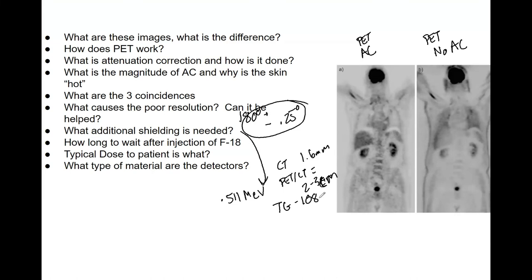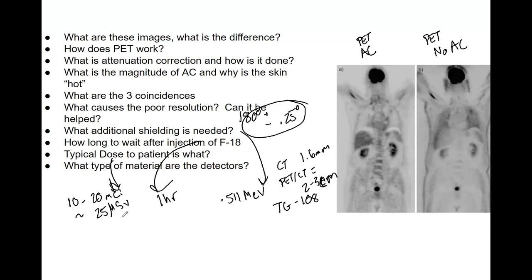How long do you wait after the injection of F18? Approximately one hour. What dose is given to the patient for a PET examination? You're looking at 10 to 20 millicuries, which equates to approximately 25 microsieverts per scan for the therapist. Staff can perform roughly 2,000 PET-CTs before hitting their annual dose limit, so staff exposure is quite limited.